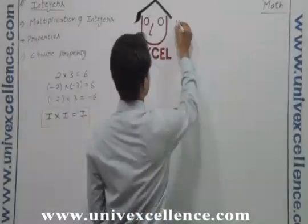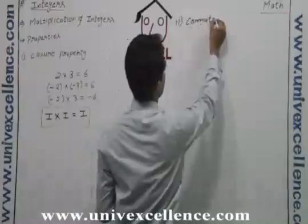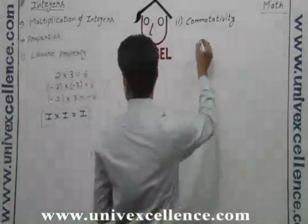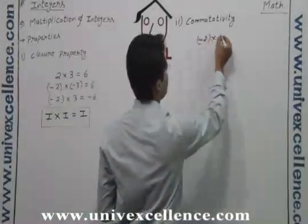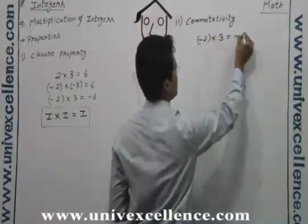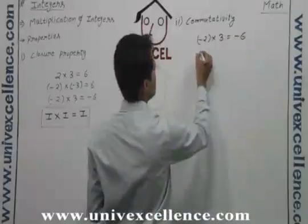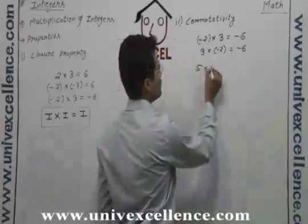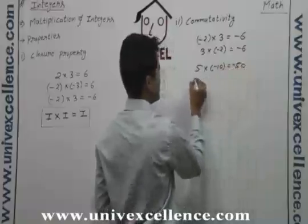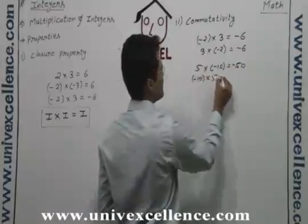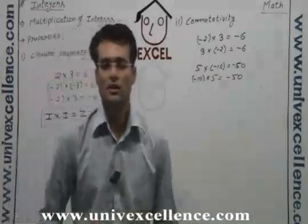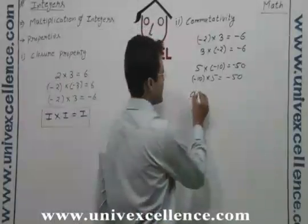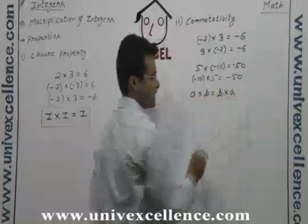What about the commutativity? So minus 2 into 3 is minus 6. 3 into minus 2, it is also minus 6. 5 into minus 10 is equals to 50 of minus, and minus 10 into 5 is equals to minus 50. It means whatever the order of the multiplication, we get the answer. So we can say that commutativity is followed by the multiplication of integers.